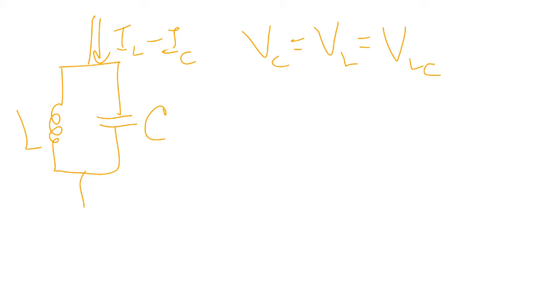If we think about the parallel circuit that we have, I have some current flowing in, which we've established to be IL minus I sub C. I know that the voltage is the same. So VC is equal to VL, which is what I was calling VLC. And I know that the current that's flowing in is equal to IR.